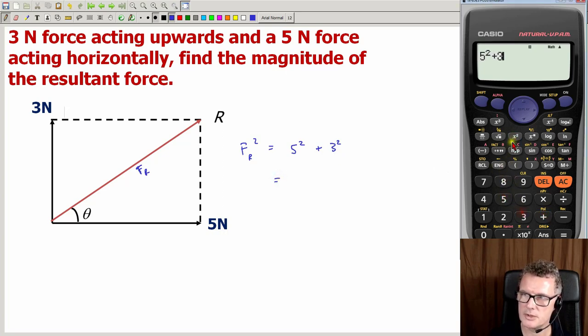5 squared plus 3 squared, that's 34. So FR will be the square root of that.